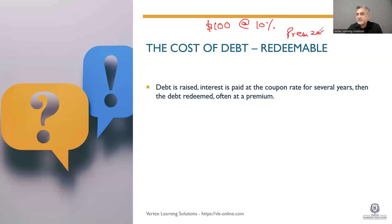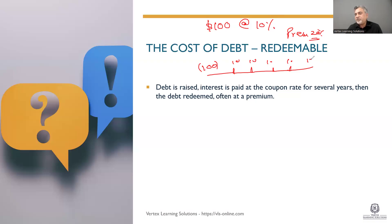With a 20 percent premium: you get $100 at year zero, then you keep paying for five years at 10 percent, which is $10, $10, $10, $10 — treated as negative cash flows. Then in the last year you pay a premium of $120, so you pay the interest and also return the original amount with a 20 percent premium. It has a beginning, an end, year zero, and year five.